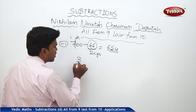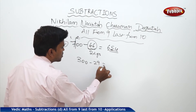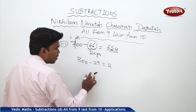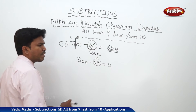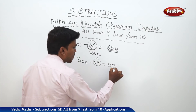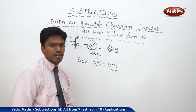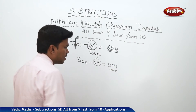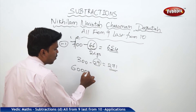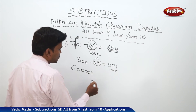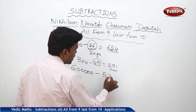One more example: suppose 300 minus 29. What is the answer? 3 becomes 2, and applying All from 9, Last from 10 to 29 gives 71. So my answer is 271. Now let's try 6 lakhs minus 5348.